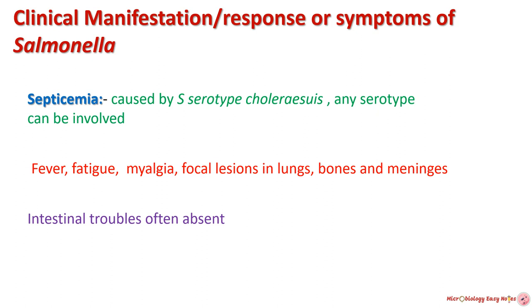The next symptom is septicemia, commonly associated with Salmonella serotype choleraesuis but may be caused by any salmonella serotype. After oral infection, there is early invasion of the bloodstream with possible focal lesions in the lungs, bones, and meninges. Intestinal manifestations are often absent in this form.